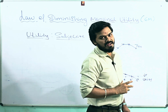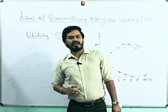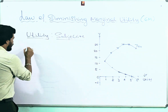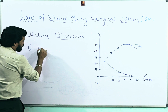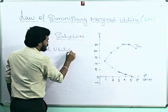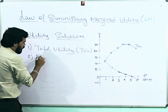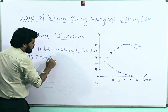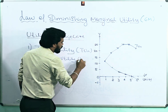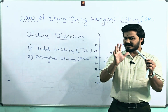Under the cardinal utility analysis, we have two types of utilities. The first one is Total Utility, denoted by TU(N), and the second one is Marginal Utility, denoted by MU(N). Without understanding these two topics, we cannot understand the Law of Diminishing Marginal Utility.